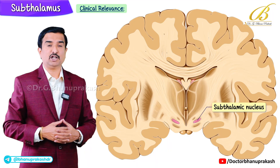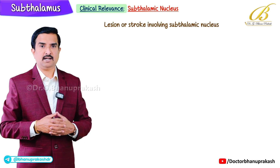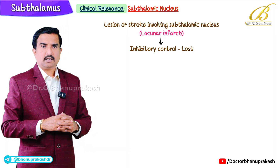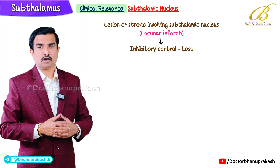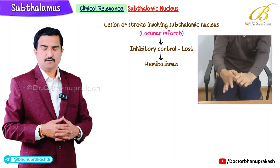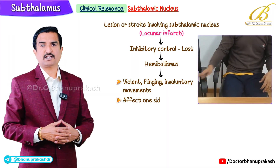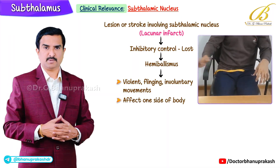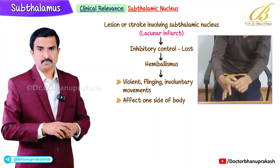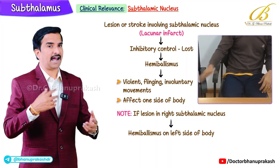What is the clinical relevance? What happens if the subthalamic nucleus is damaged? If there is a lesion or stroke involving the subthalamic nucleus — especially due to something like a lacunar infarct — the inhibitory control is lost, leading to a condition called hemiballismus. This is a rare but striking movement disorder characterized by violent, flinging involuntary movements usually affecting one side of the body. Because motor pathways decussate and cross over, a lesion in the right subthalamic nucleus leads to hemiballismus on the left side of the body, and vice versa.